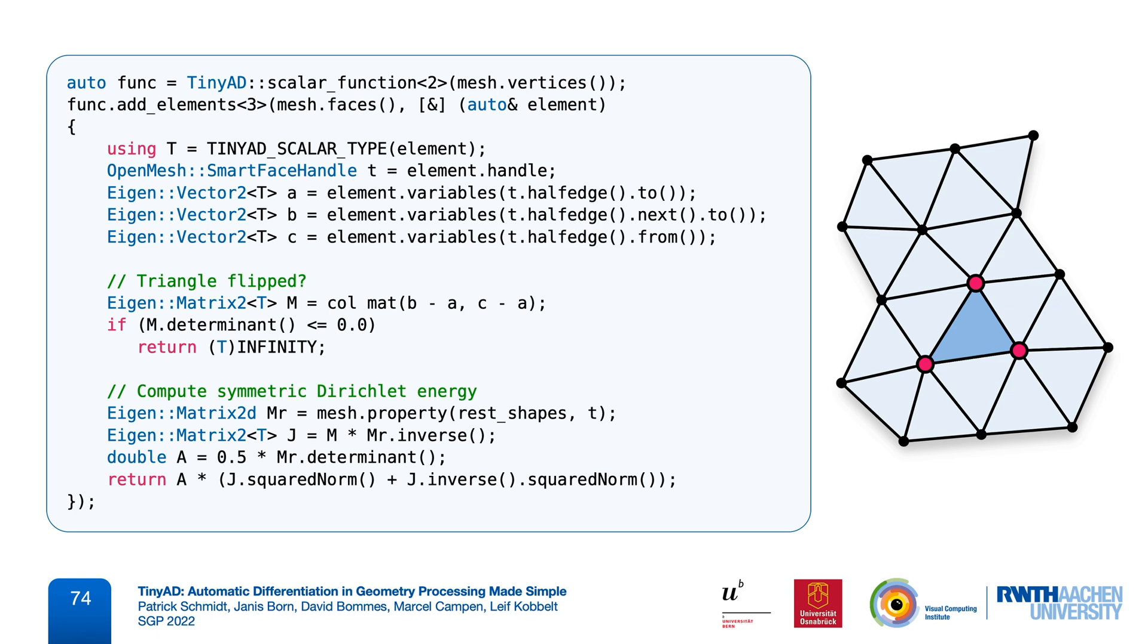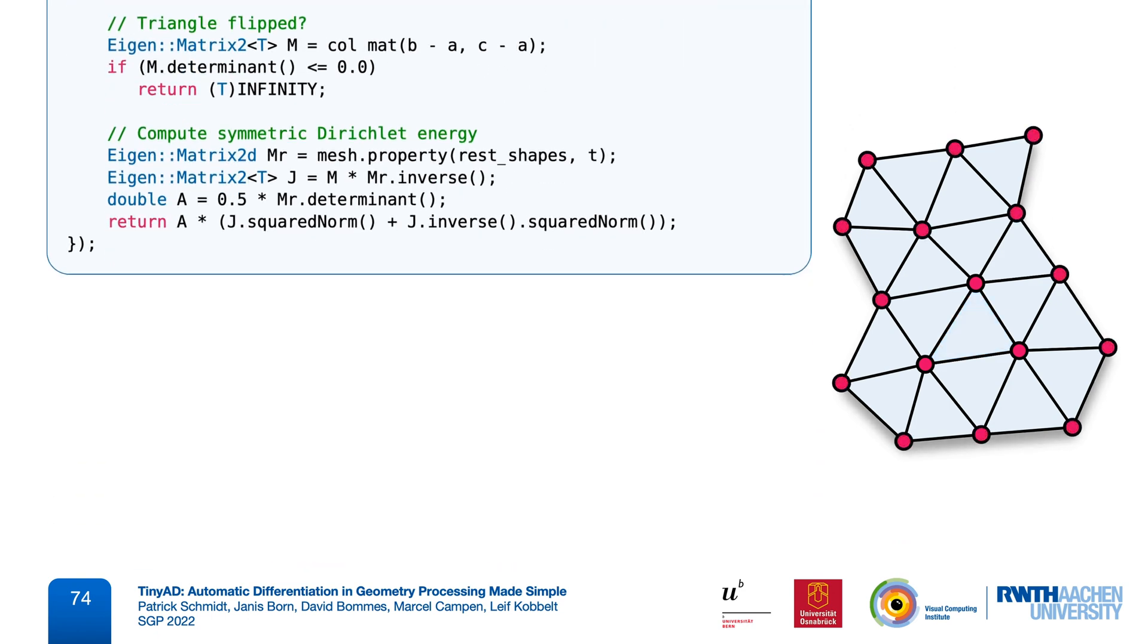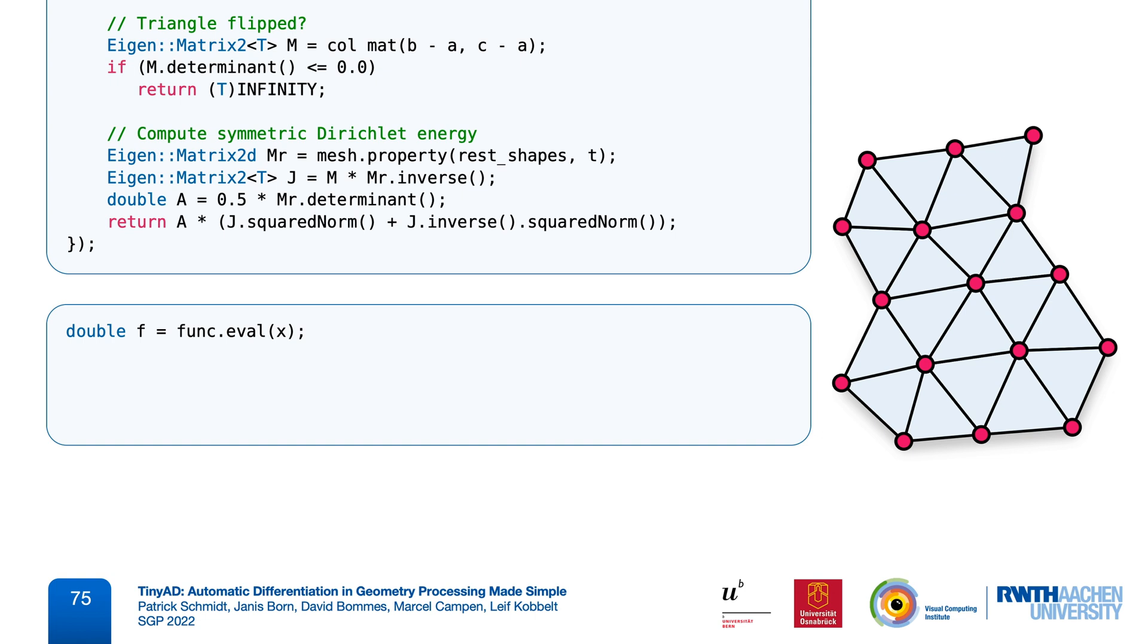We can then evaluate our scalar function in different ways. For example, we could just compute its value without derivatives. This is something we will need inside a line search. Or, we can in addition evaluate its gradient, or the full set of function value, gradient, and sparse Hessian. Another feature is that it can automatically perform a positive definite Hessian projection on a per-element level.